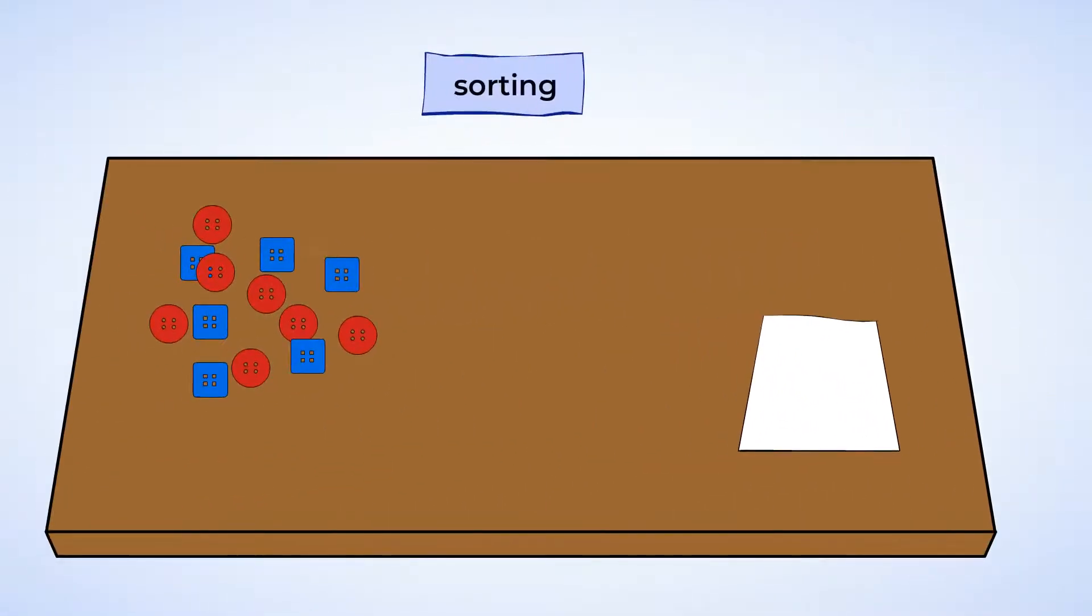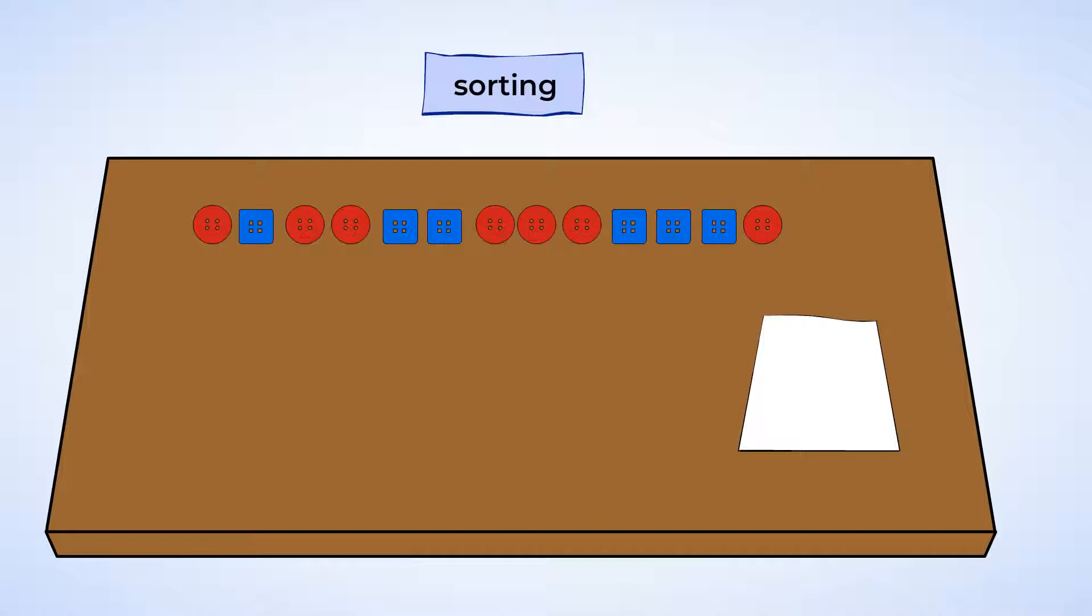Wow, that's a lot of buttons. These are all the buttons on Will's table. Let's look at the first button. Is this one red? Yes. Great, so we can put that over here. And let's look at the next button.